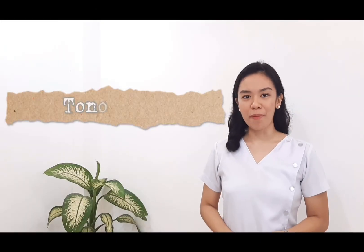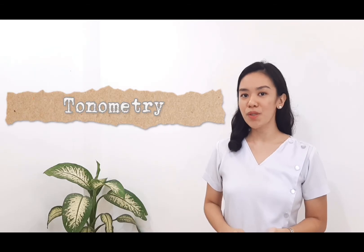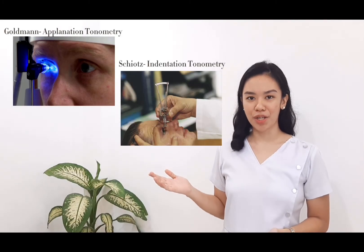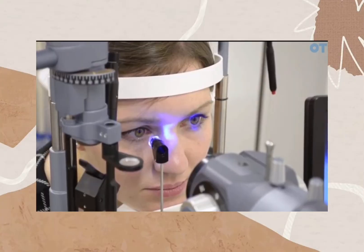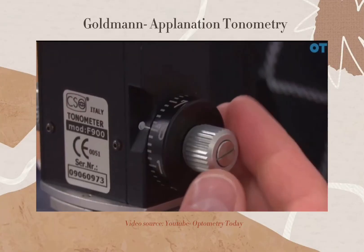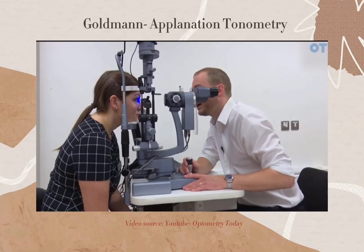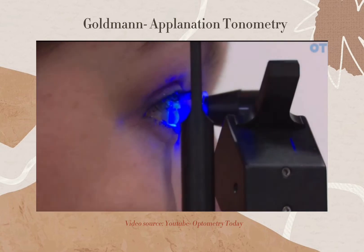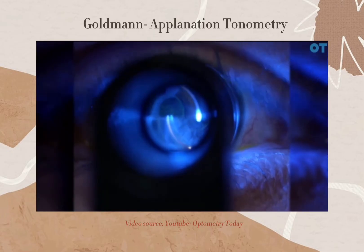The sixth part of the eye exam is the measurement of intraocular pressure. This could be assessed using different methods, such as Goldmann Applanation Tonometry, the Schiøtz Indentation Tonometry, and Digital Tonometry. According to the American Academy of Ophthalmologists, Goldmann Applanation Tonometry is considered the gold standard. It measures the amount of force required to flatten the corneal apex by a standard amount using a slit lamp attachment that uses the blue filter.